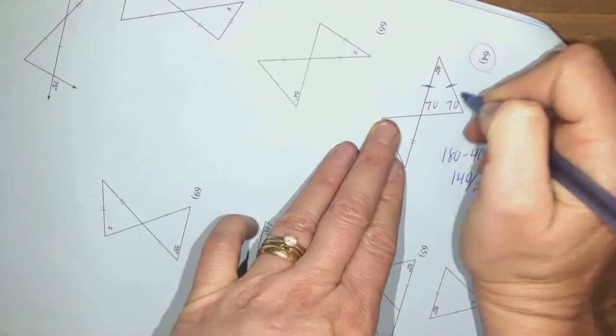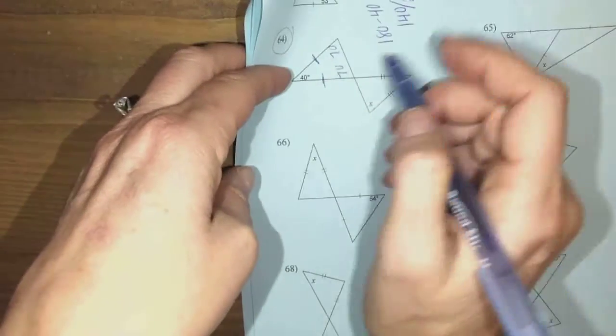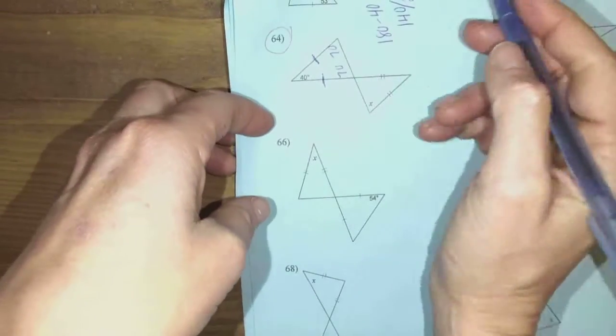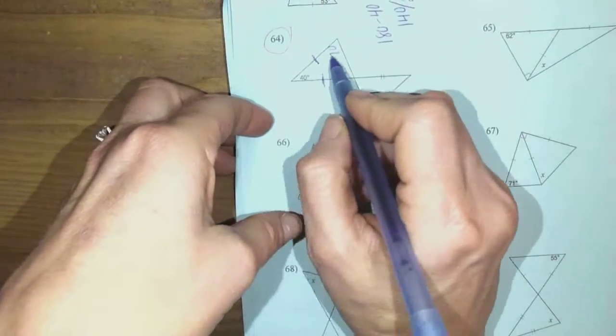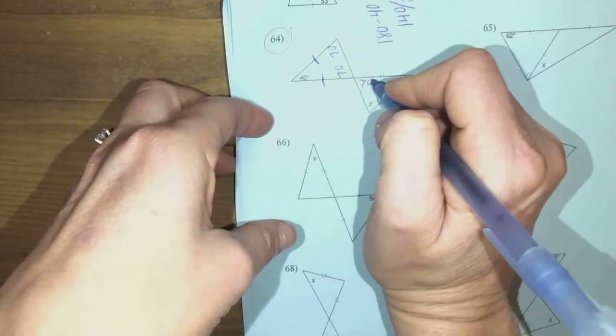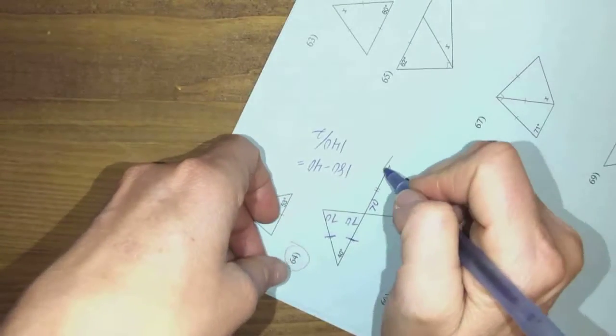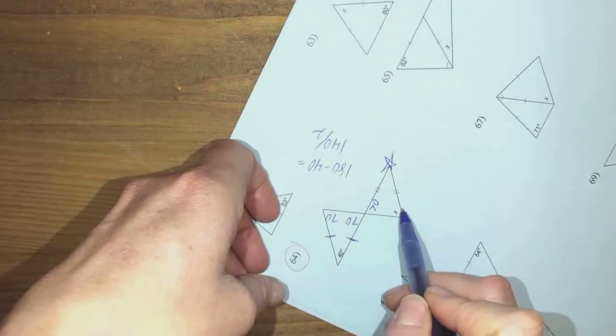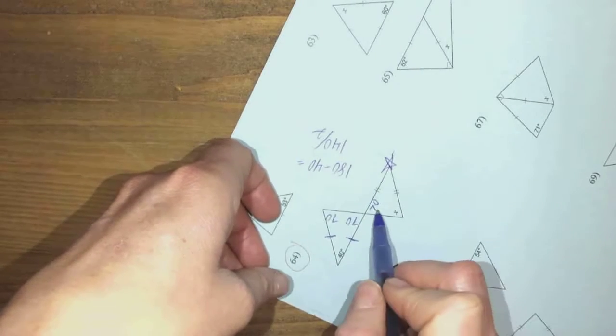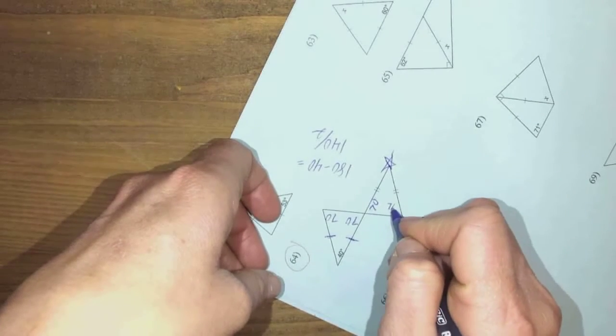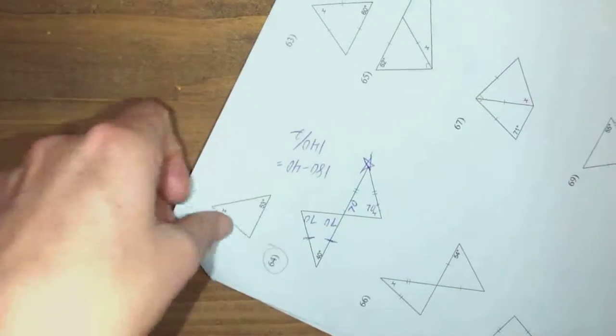Then vertical angles are equal, and you might go, I don't need to know that. Well, you have to work your way over. This is 70. Now I see another isosceles triangle here. I like to think of it as the Christmas tree. If this one's 70, this one would be 70 because base angles are equal, and that concludes the blue packet.